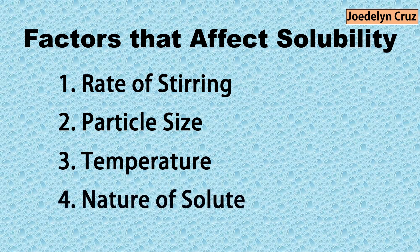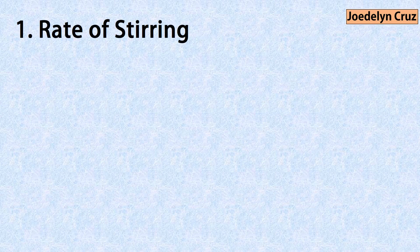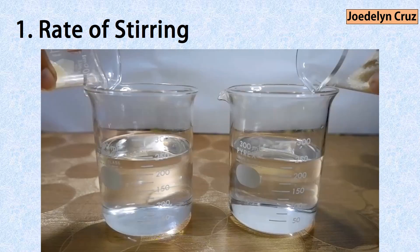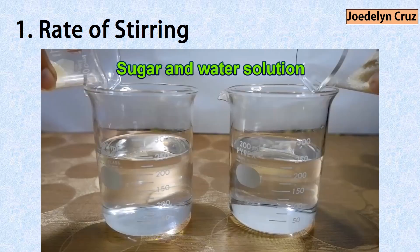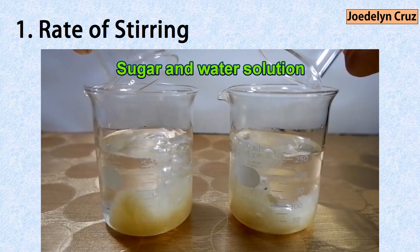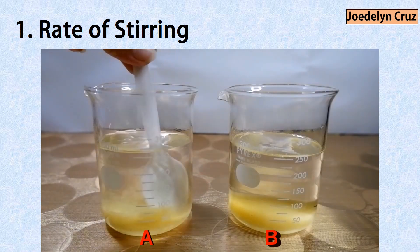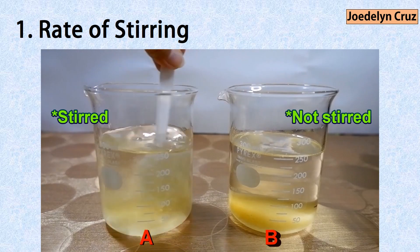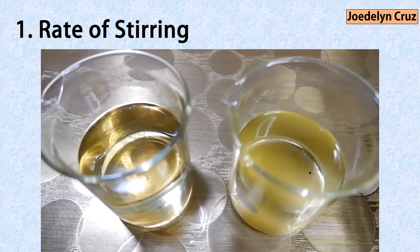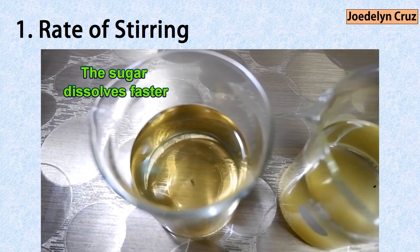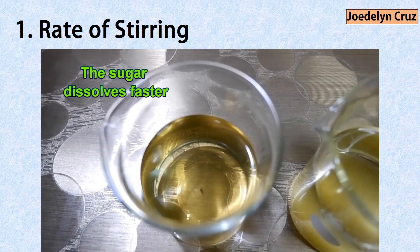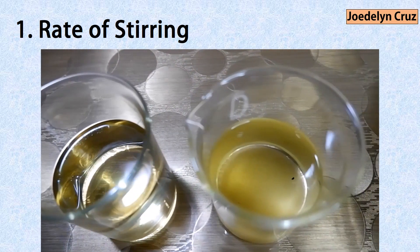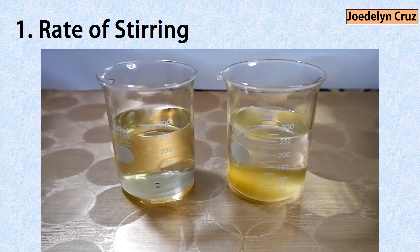Let us first discuss how the rate of stirring affects the solubility of a solute. To understand it better, here is the experiment. This is a solution of sugar and water. Solution A is being stirred, while solution B is not stirred. The solute in solution A, which was stirred, dissolves faster than the solute in solution B, which was not stirred.